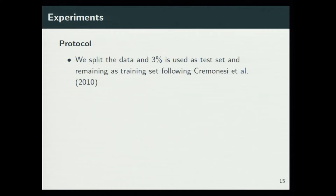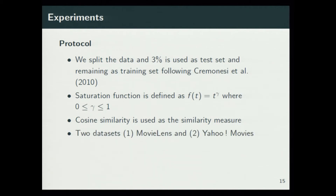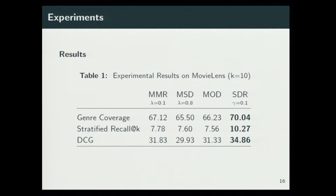The protocol of the experiment: we split the data into train and test, using 3% for testing, following the protocol given by Cremonesi and others. Our saturation function is defined as f(t) = t raised to gamma, for gamma between 0 and 1, making it a concave function. Cosine similarity is used as the similarity measure. We ran experiments on two datasets — MovieLens and Yahoo Movies. Since there is no consensus regarding diversity metrics, we measure different aspects of diversity covering popularity bias, coverage, etc. These are our results for MovieLens for 10 recommendations.